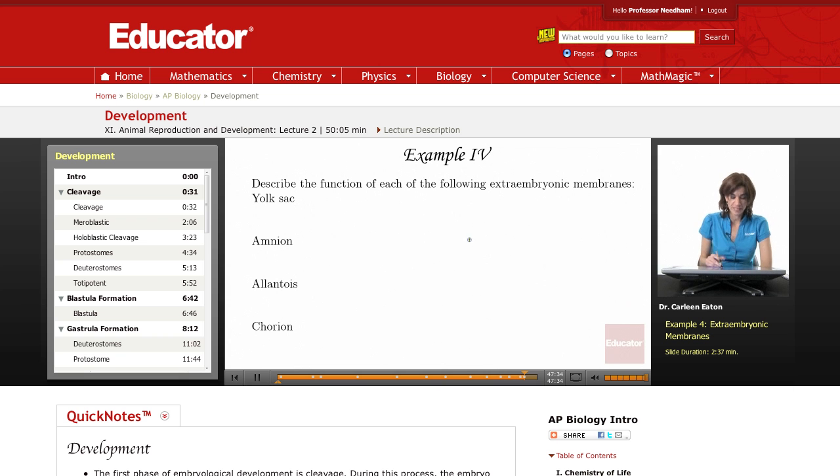Describe the function of each of the following extraembryonic membranes. First, yolk sac. It contains yolk and what does the yolk do? Provides nutrition for the developing embryo.